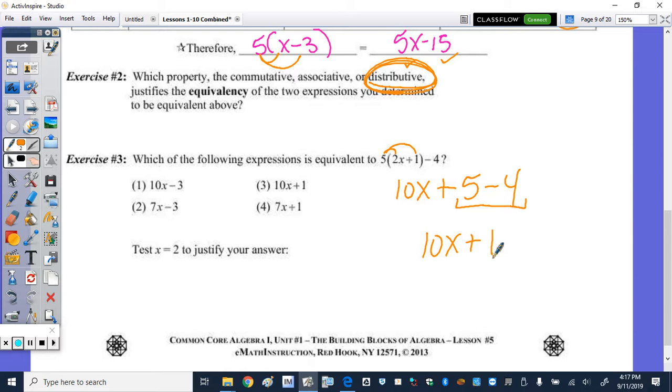So the correct answer is choice 3. And then it wants us to justify our answer by testing x equals 2. So what that means is we're going to take and plug in 2 in the original expression. So it's going to be 5 times 2 times 2 plus 1 minus 4. And then we're going to take and plug in 2 in our answer, which was 10 times 2 plus 1. If we get the same thing, that justifies, so the justification is the math that backs up our claim, that the two expressions are equivalent.